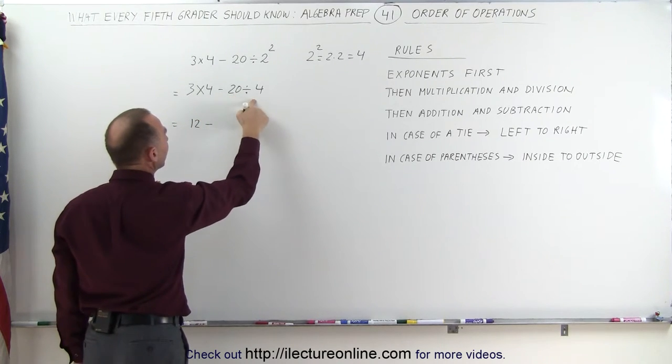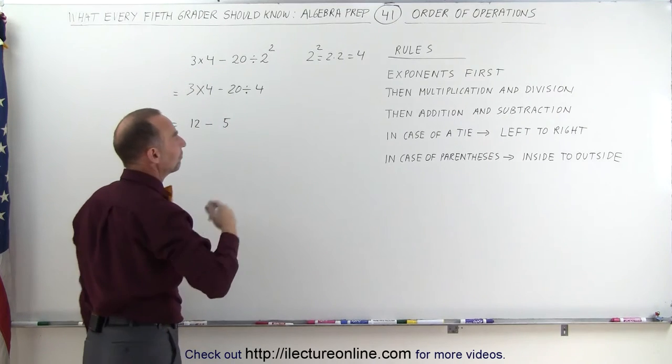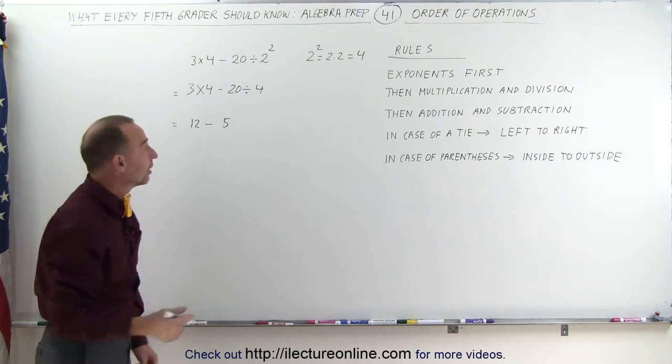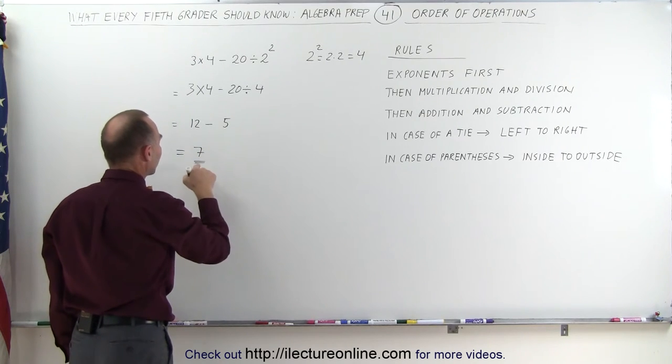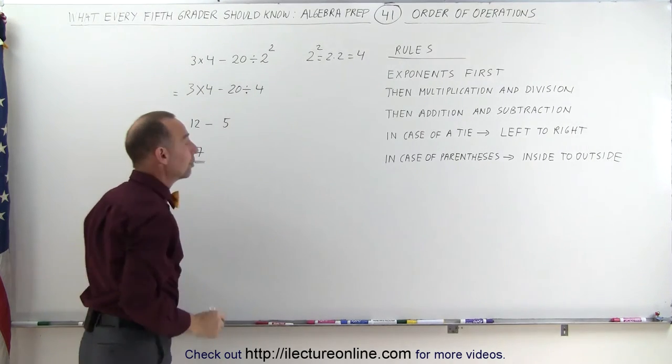minus 20 divided by 4, which is 5. And finally, we just have subtraction left. Now you subtract the 5 from the 12. 12 minus 5 is 7. And that is the correct answer for this original problem.